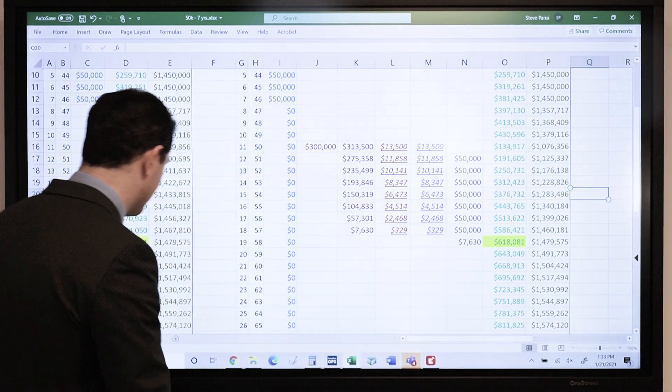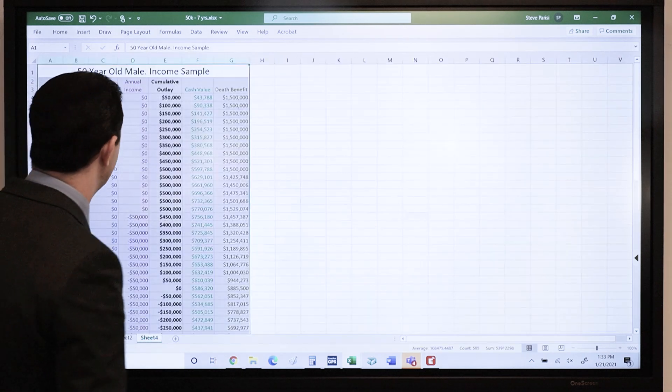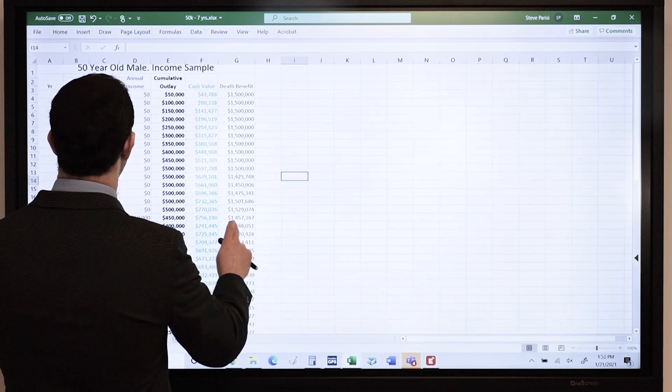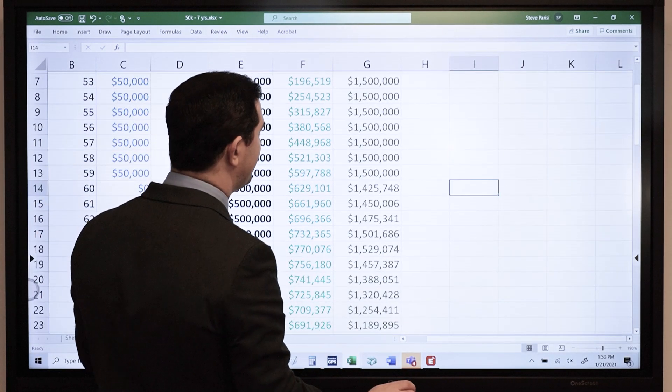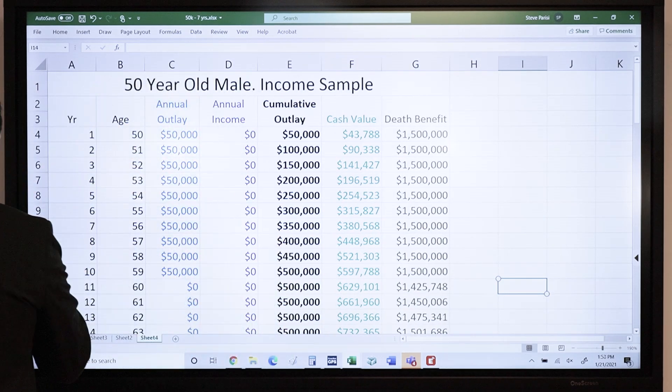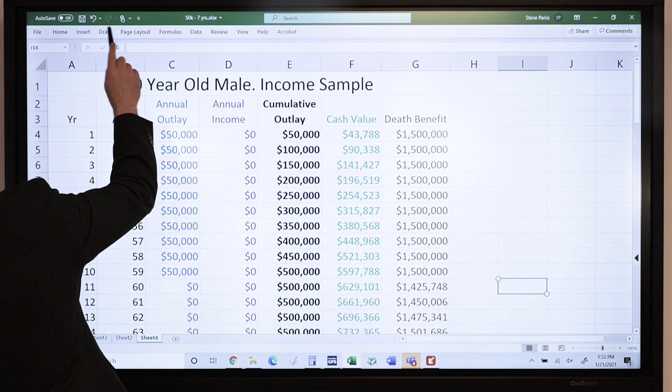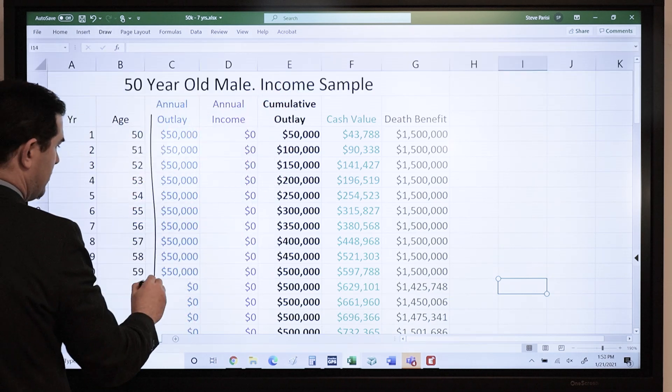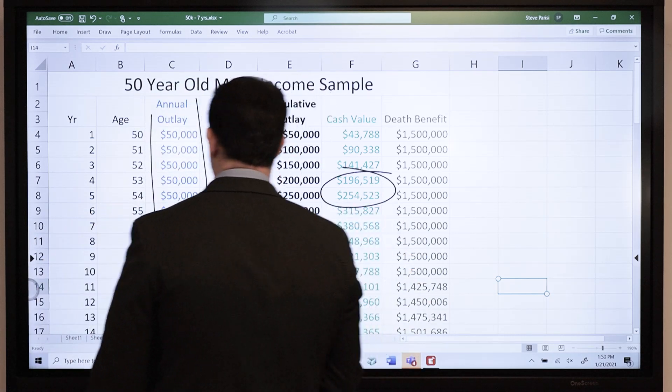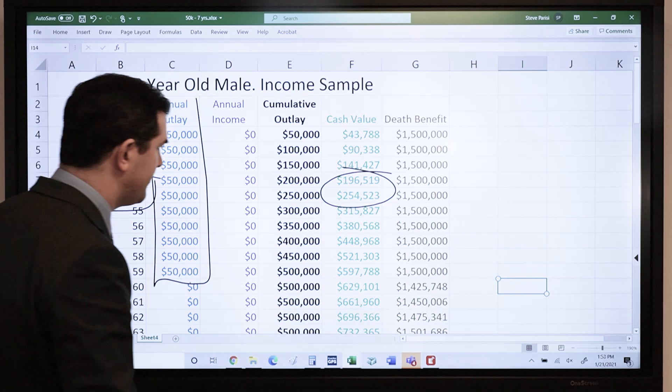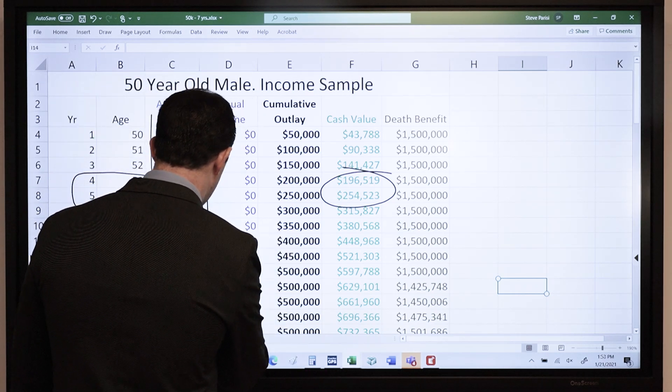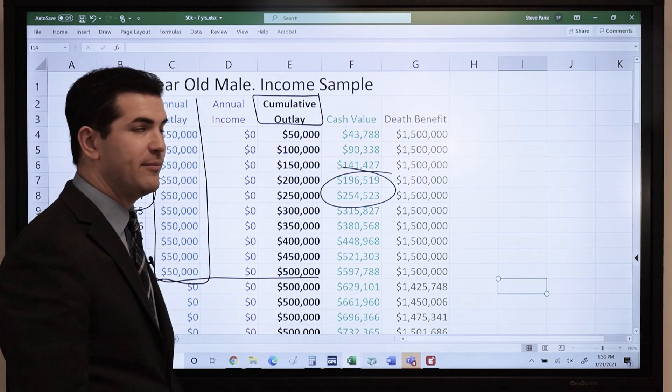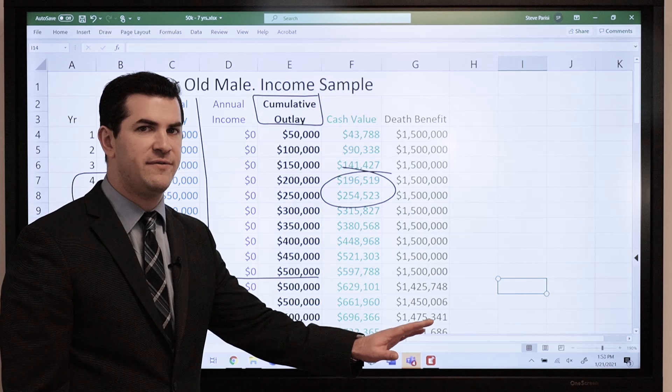A little different sample here. 50-year-old male paying in $50,000 for 10 years. Here's my payments. Cash value between years 4 and 5. Good. Paid in a total of $500,000. I want to put more emphasis on this column this time: the cumulative outlay. Meaning I paid in a total of $500,000.